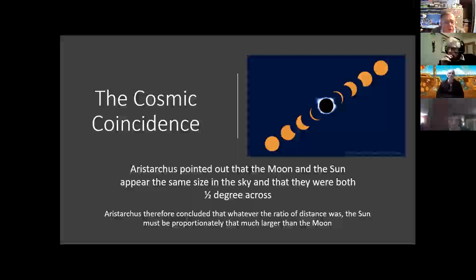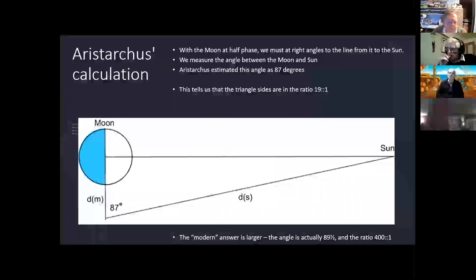But anyway, he concluded that whatever the ratio of the distance was, the ratio of the Sun must be proportionately that much larger than the Moon, and that's a very sound piece of reasoning. But he went further and realised that when the Moon is at half phase viewed from the Earth, we see half of it lit and half of it dark, then you must have this situation here.